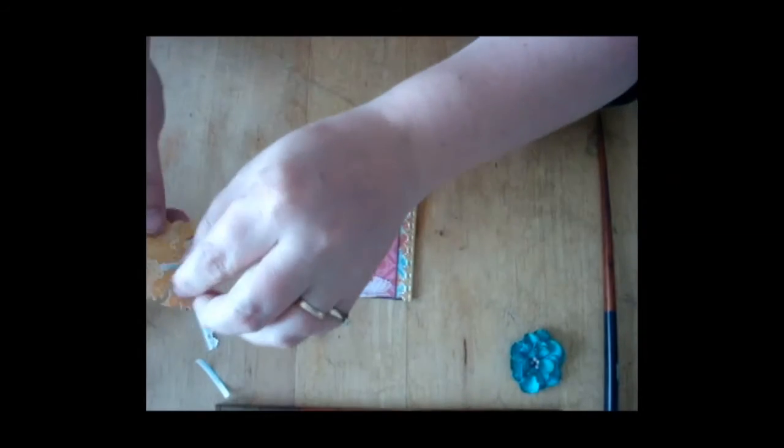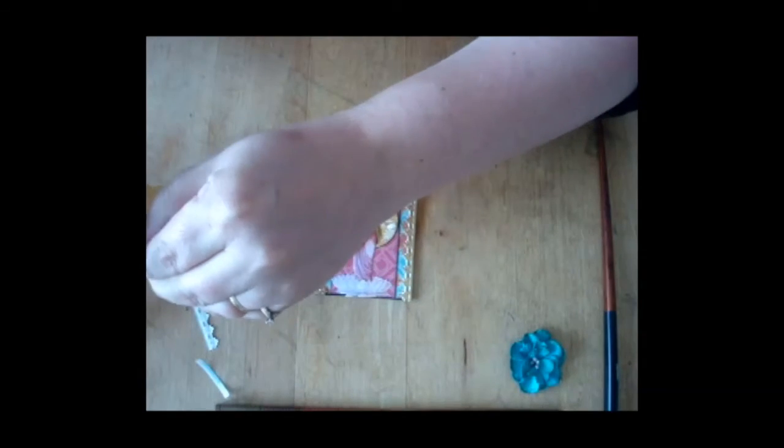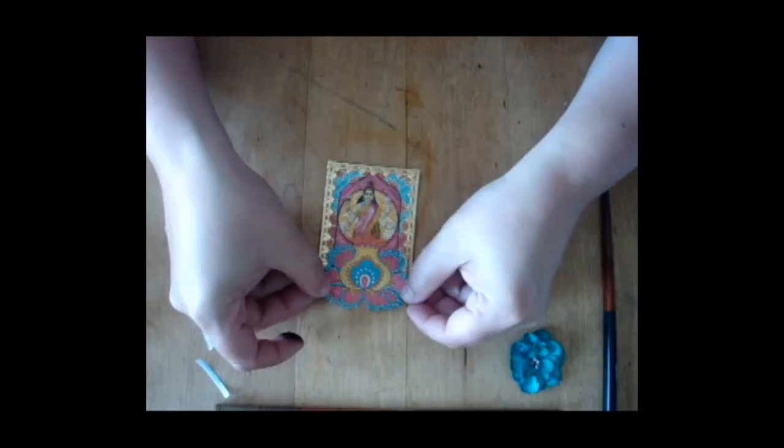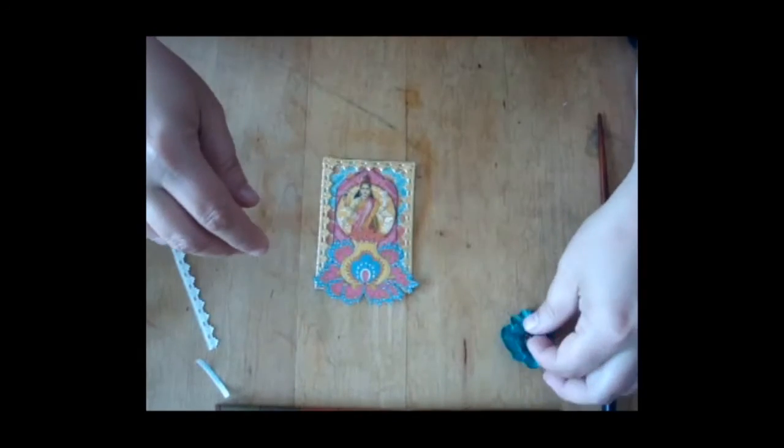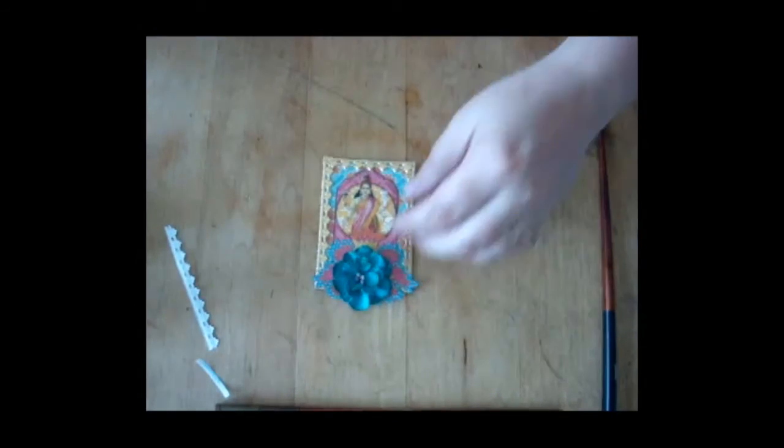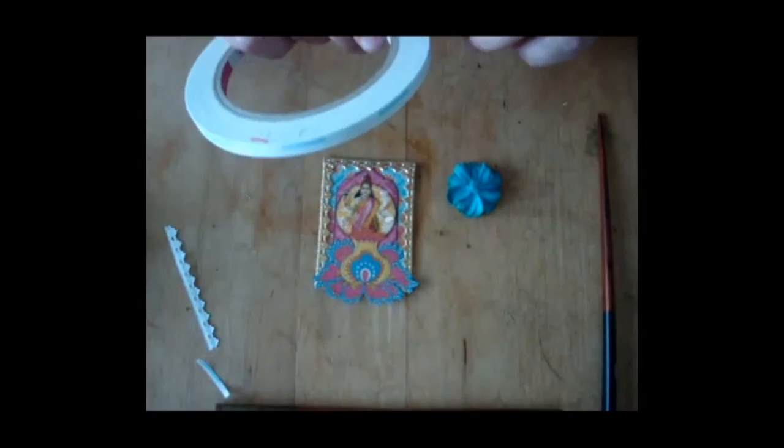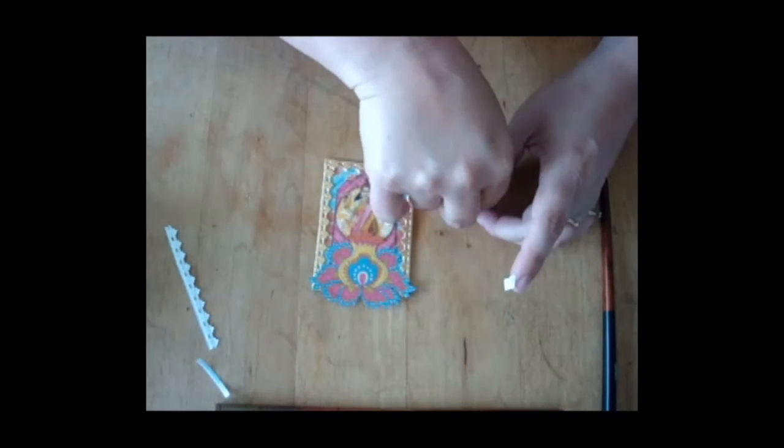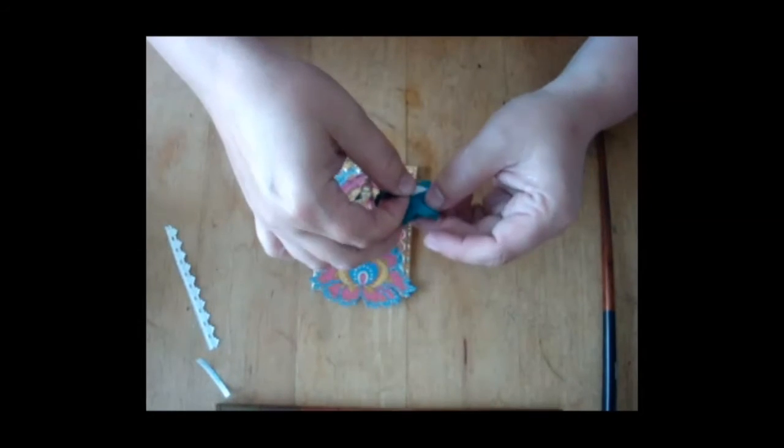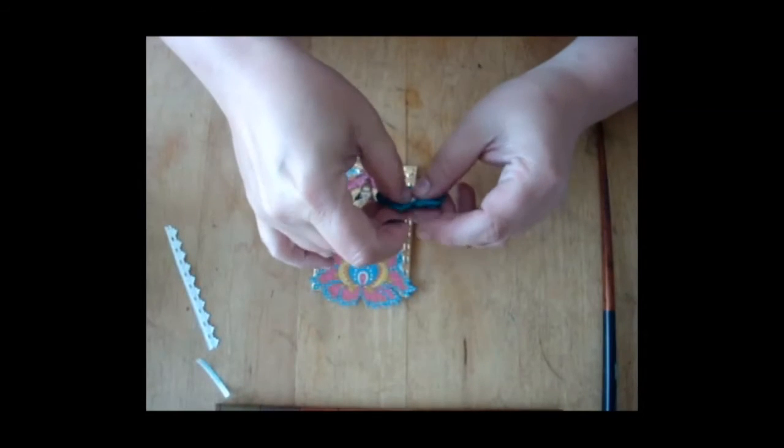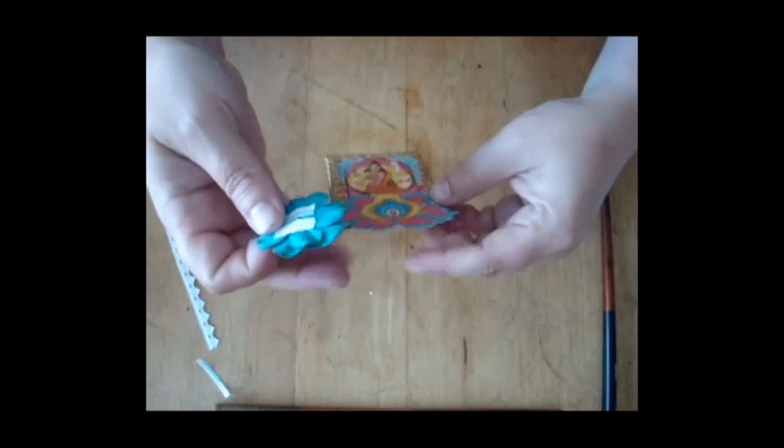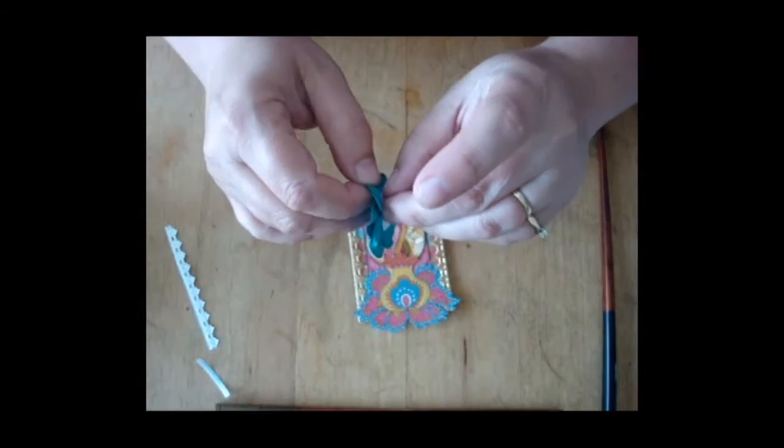Now I'm actually going to cover up the lotus flower at the bottom, but I'm keeping it there. I'm just adding some embellishments on top of that. These flowers from Petaloo are just absolutely divine, they are so nice. They're so pretty and soft and just lovely.